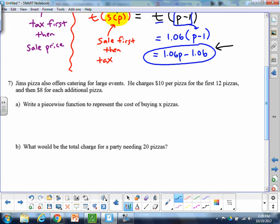And then finally, back to Big Jim's pizzeria here. He also offers catering for large events. $10 per pizza for the first 12 pizzas and then $8 after that. Can we write a piecewise function for the cost of buying X pizzas? All right, so let's see what we got. So $10 per pizza for the first 12 pizzas. So the total cost would be 10 per pizza. So 10X. And that rule applies for the first 12. So if the number of pizzas is less than or equal to 12, there's going to be some other rule for if you buy more than 12, if you buy 13 or more.